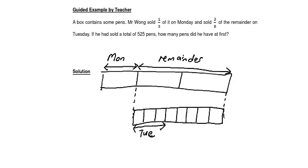We can see that 1 unit here corresponds to 4 parts. So we can equalize the number of units — here can represent 4 units, and here is another 4 units. So everything altogether is 12 units.